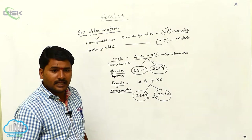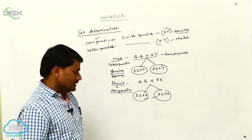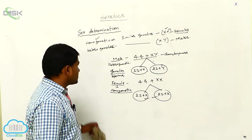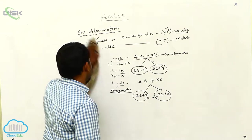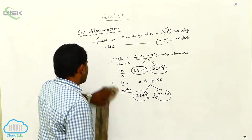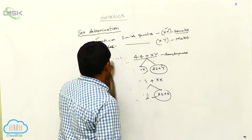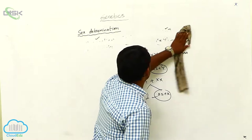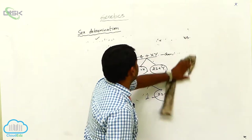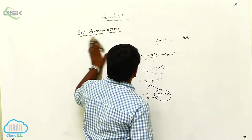The female human being is called a homogametic individual. Based on the heterogametic individuals, the sex is determined. This process is called heterogametic sex determination.